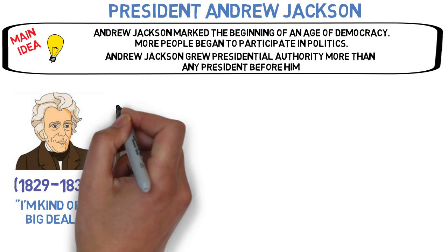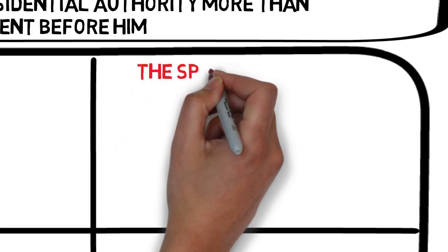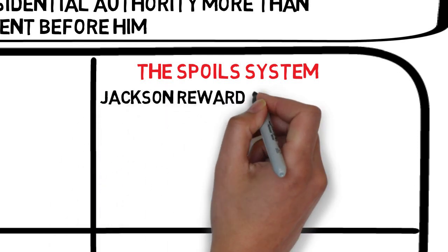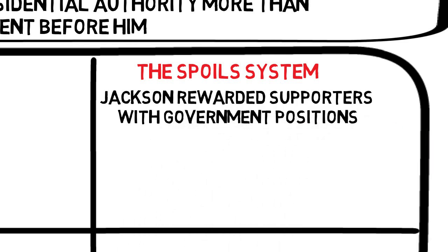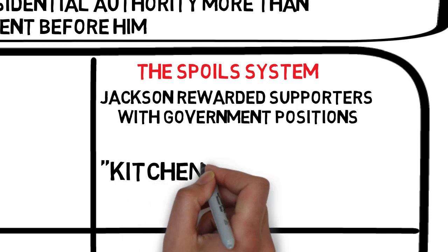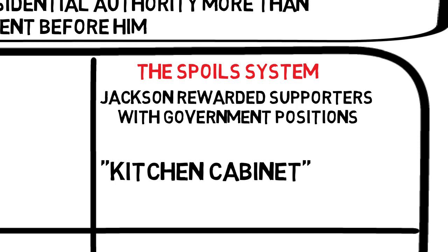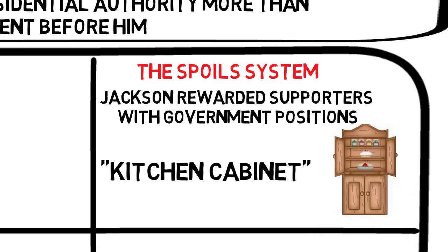There are four aspects of the Jackson presidency that we will focus on. The first was his use of the spoils system. The spoils system refers to the practice of giving people government jobs on the basis of party loyalty. While this had always gone on in American politics, Andrew Jackson took it to another level. Upon assuming office, he fired large numbers of existing federal employees and replaced them with his supporters. Jackson often clashed with his own cabinet,